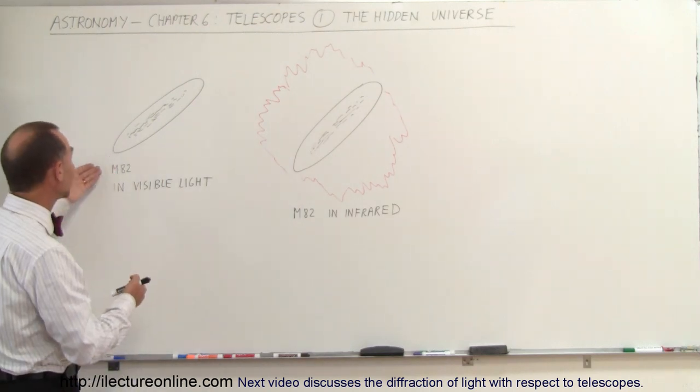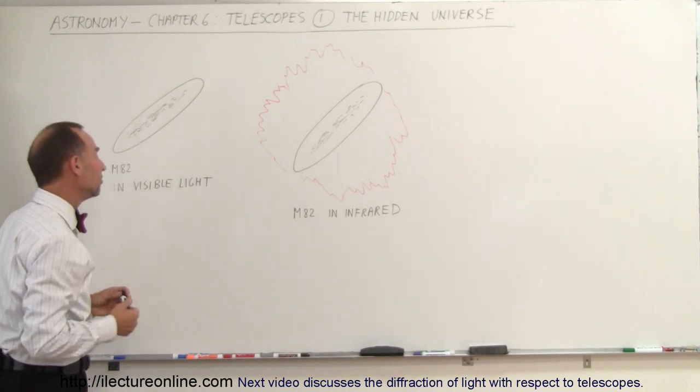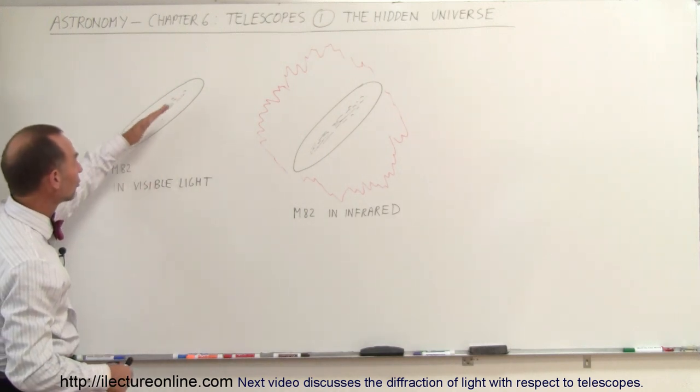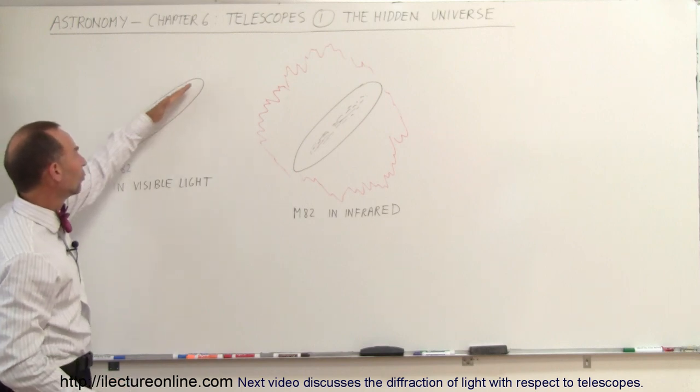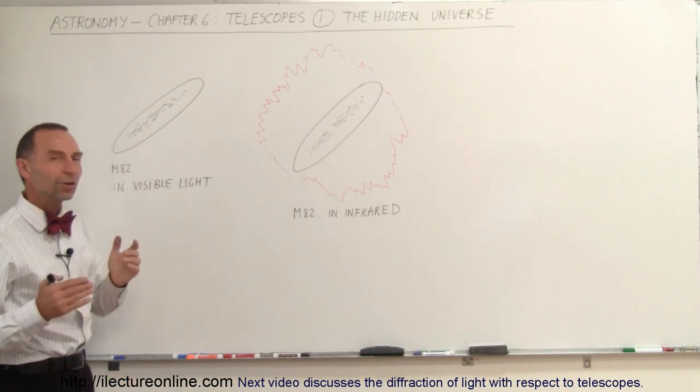As an example, here we have the galaxy M82, which looks like a typical spiral galaxy in visible light. You see the large dust lanes that run through it and all the stars, the billions and billions of stars that make up the galaxy.